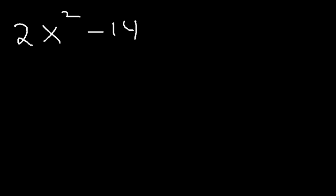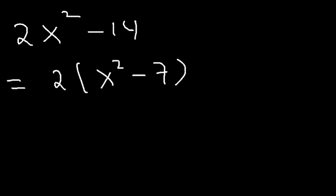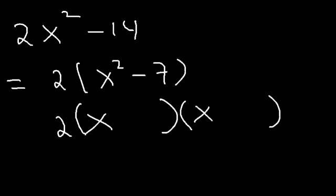Try this one: 2x squared minus 14, factor it completely. We can take out a 2 and we're left with x squared minus 7. Now we need to factor it using square roots, so this is going to be 2 times x plus root 7 times x minus root 7.